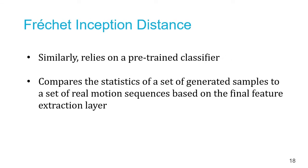The Frechet inception distance is conceptually similar to the inception score in that it also relies on a pre-trained classifier, except it compares distribution statistics across a set of motion sequences for both synthesized and ground truth motion. These distributions are computed from the final feature extraction layer in the pre-trained classifier. Please see the paper for further details.